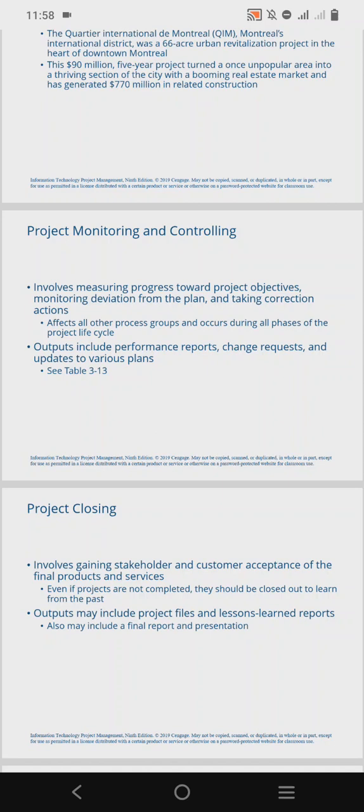The outputs or results from project monitoring and controlling include the performance reports, change requests, and updates to various plans.